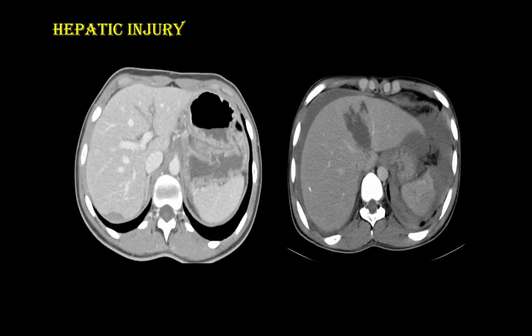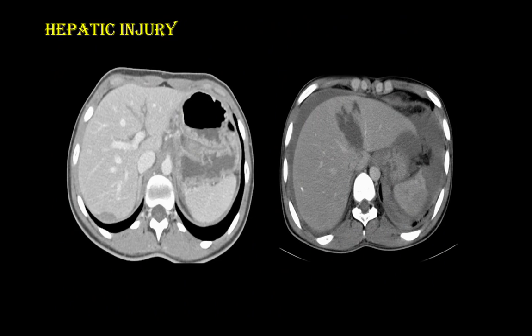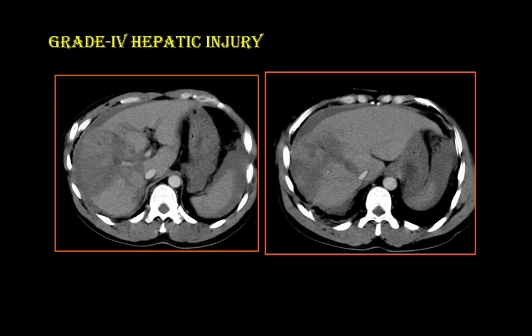In the first image, a small hypodensity is seen and taken as a Grade 1 injury. In the second image, there is a hypodensity area more than 3 cm with perihepatic fluid collection, taken as a Grade 3 liver injury. The third image shows a large hematoma more than 10 cm, taken as a Grade 4 hepatic injury.